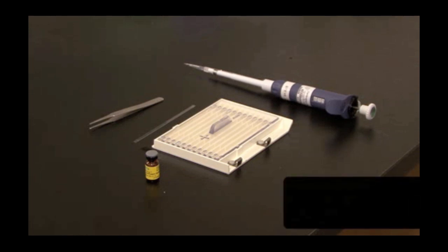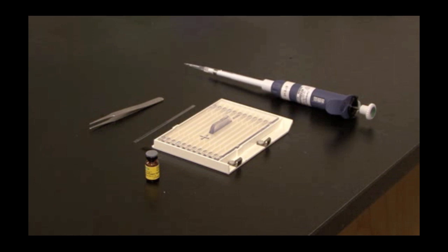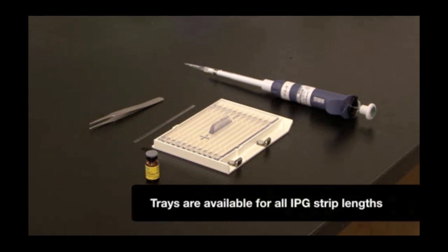To rehydrate the strip, I will load 200 microliters of sample into the focusing tray in each lane that I will be running a strip. I am using a focusing tray that is specific for 11 centimeter strips. Trays are available for all IPG strip lengths.